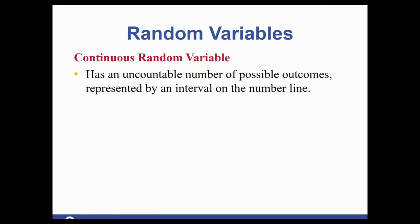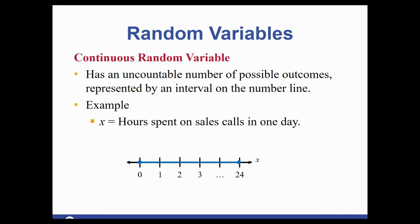The other one is continuous. Continuous is things that are uncountable number of possible outcomes. So oftentimes, these are things that are on a number line where you're having interval pieces, decimal values in between each one of those whole numbers. So the example was the hours spent on a sales call. Hours could be split down into minutes, into seconds, into milliseconds. There's so many smaller portions of an hour that it's continuous.